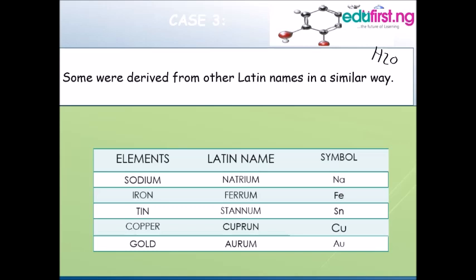The same applies to iron with Latin name ferrum and symbol Fe. We have tin with Latin name stannum and symbol Sn. Copper has the Latin name cuprum and symbol Cu. Gold has the Latin name aurum and symbol Au.